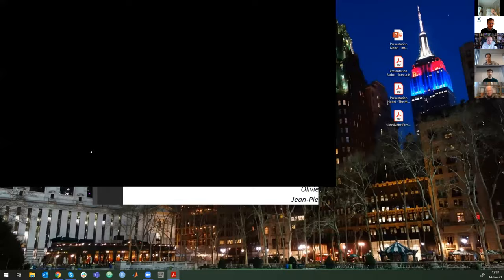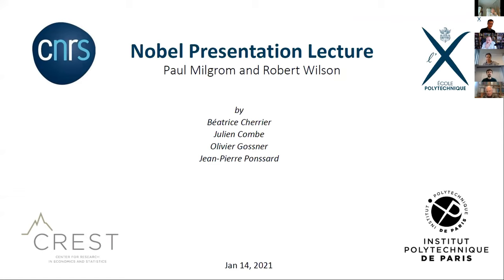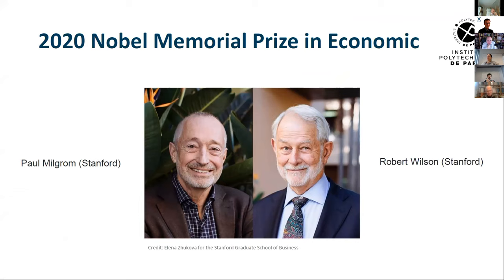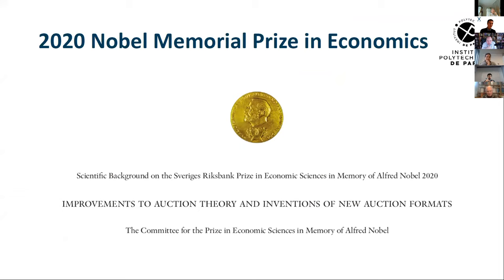Welcome everyone, thank you for coming for this new lecture that we would like to start every year. This will be a Nobel presentation lecture for the current winners of the Nobel Prize. This year's winners are Paul Milgram and Robert Wilson from Stanford, and they won the 2020 Nobel Memorial Prize in Economics for improvements to auction theory and inventions of new auction formats.